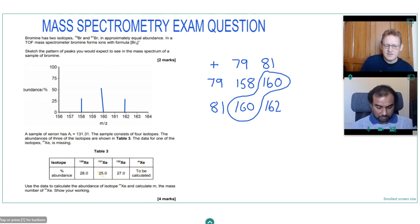So we know all these abundances, because their percentage abundances, have to add up to 100. So that's the first thing we can do. So 28 and 25, add 27, is 80. So we know the percentage abundance of our missing isotope must be 20.